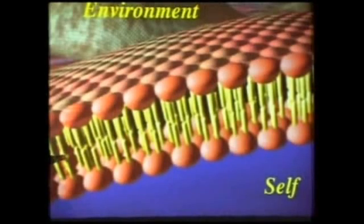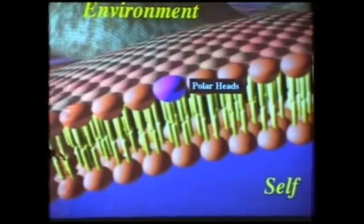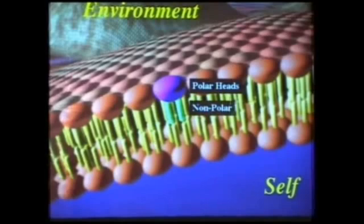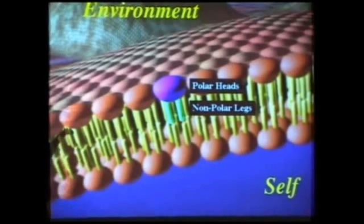Let's look at the membrane because there's something very interesting. The membrane is a bilayer structure — two rows of molecules that are mirror images of each other. The molecule is called a phospholipid. The head is polar, meaning it has positive and negative charges, while the legs of the molecule are non-polar — they're oil. Like oil and water, the heads bind to water but the legs resist water.